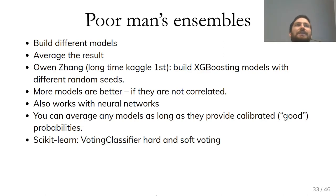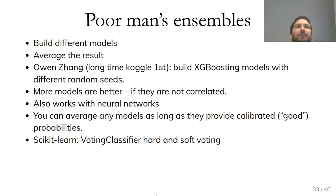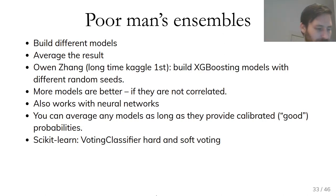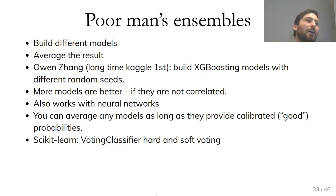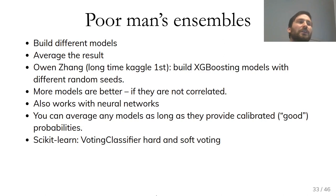You can either average probabilities (soft voting) or do hard voting — just count how often each model wins. If all models are the same type, like similar neural networks, soft voting is probably better. If one is a neural network and one is a tree, soft voting may not work as well because they're not both calibrated — you'd need to calibrate them first.